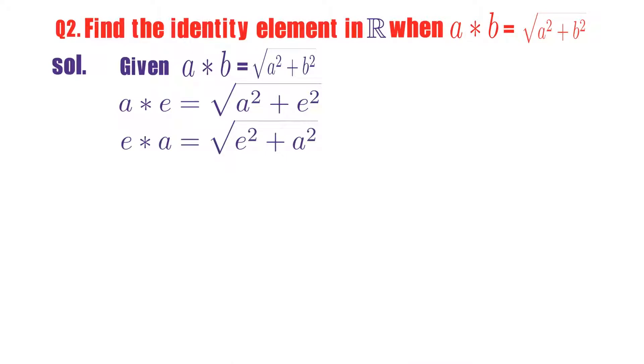Similarly, what is e star a? According to given definition, e star a is equal to root over e square plus a square. You observe that a star e is same as e star a.